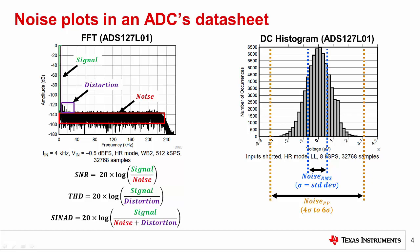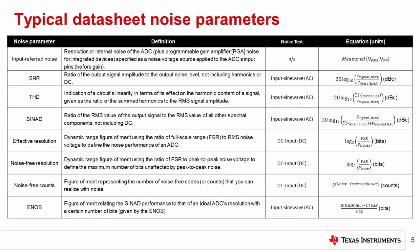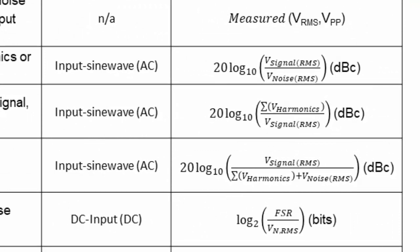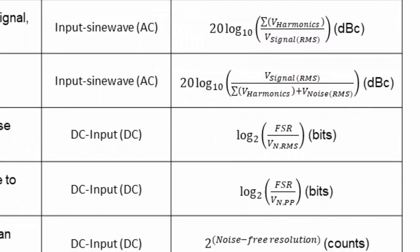Now let's consider how we use this information to calculate ADC noise parameters. Shown here are the most common noise parameters found in an ADC's datasheet, along with their definitions and equations. Noise parameters generally describe either AC or DC performance. We introduced SNR, THD, and SINAD, which are derived from an FFT as a result of the input sine wave test. One important point is that these equations always use the RMS signal and noise, not peak-to-peak, so you must make sure to convert your signal and noise values if they are not already in this form.